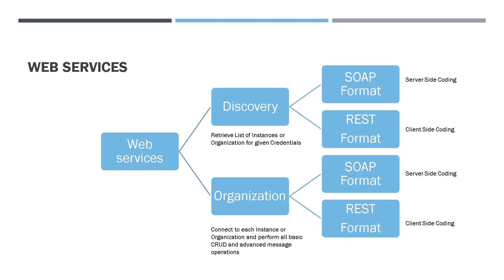The web services are of two types in Dynamics 365. One is the discovery type and another one is the organization type. With the discovery type of web services, you can retrieve a list of instances or organizations for given credentials, because as a user I can have access to different instances like development environment, sandbox environment, unit testing environment, or production environments.